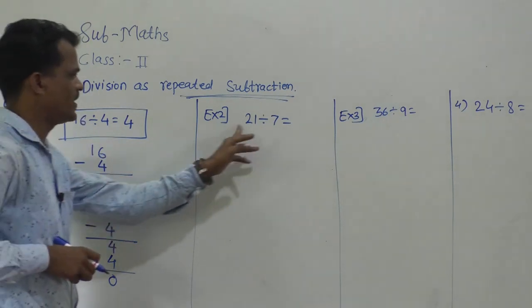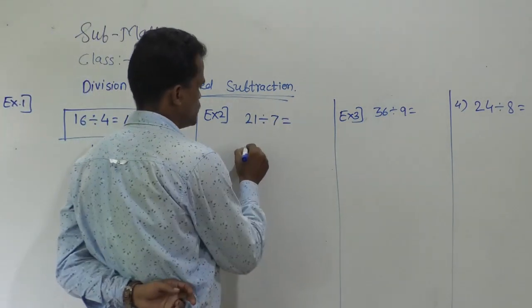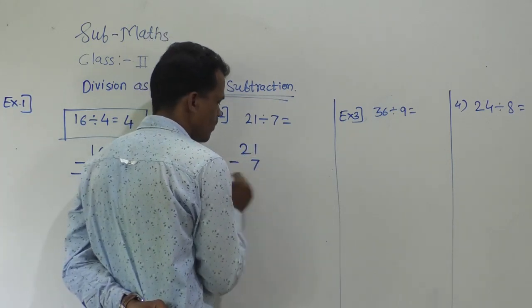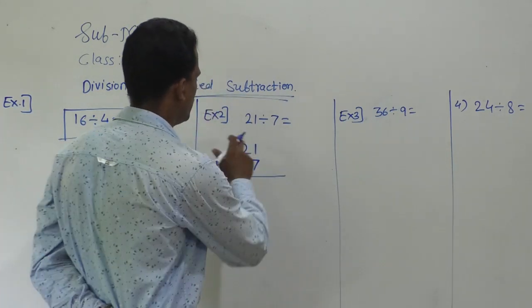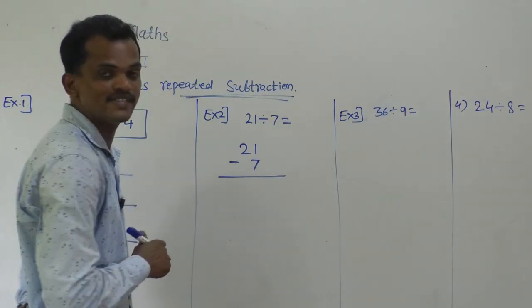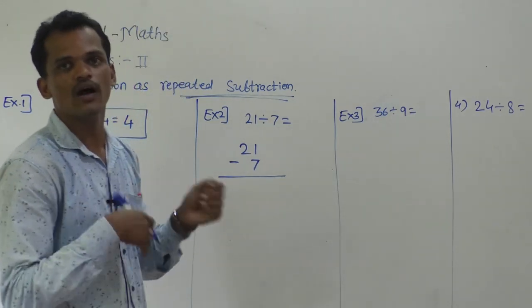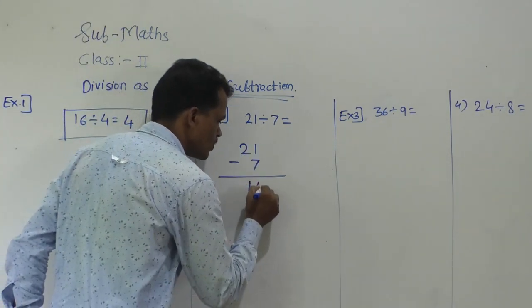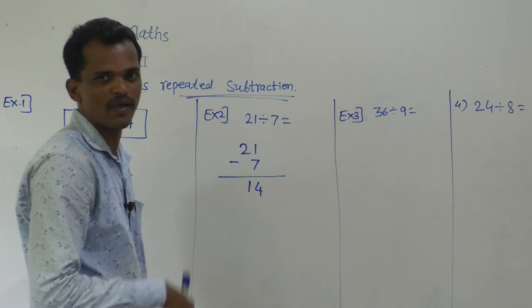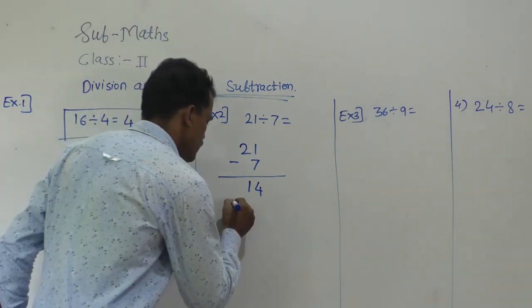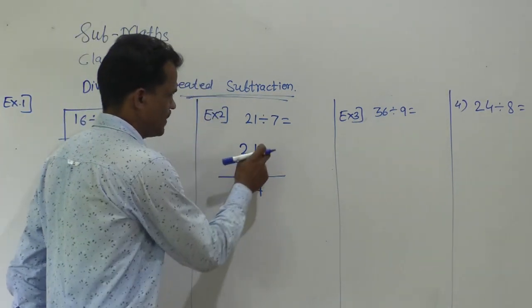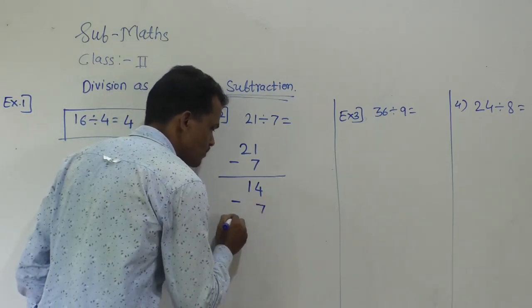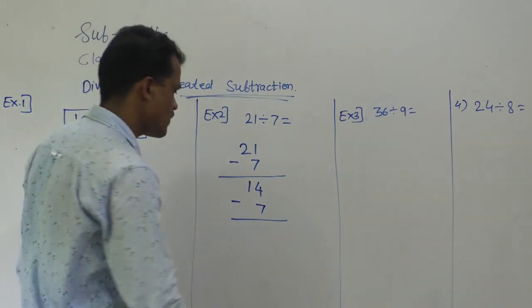Next example: 21 divided by 7. Write the dividend and subtract the divisor. 21 minus 7 — use backward counting — 21 minus 7 is 14. Then again subtract 7: 14 minus 7 is 7.